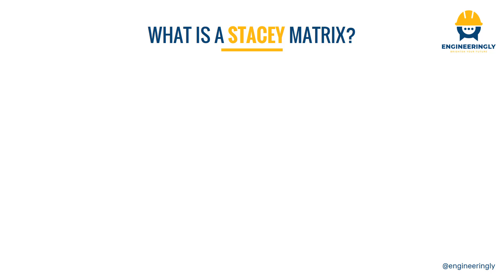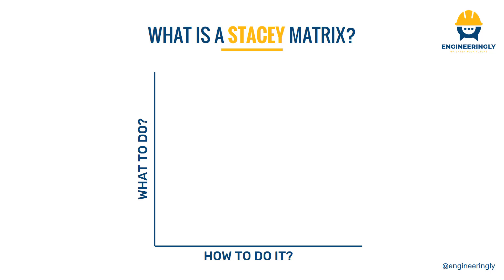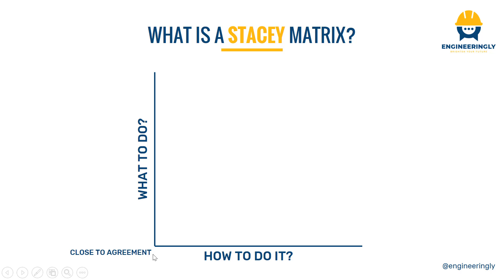Before we get to the details, let's see what the Stacy Matrix is. We have an X-axis and a Y-axis. The X-axis describes the technology — is the team able to perform the tasks related to the project, or do we have the necessary technology, tools, and techniques in hand? On the Y-axis, we have the requirements — how certain we are about what we are going to do. At the base, we are close to agreement, meaning requirements are clear.